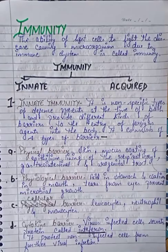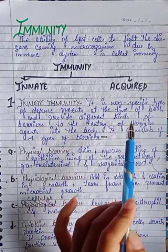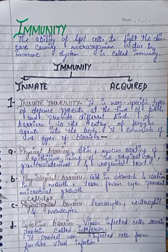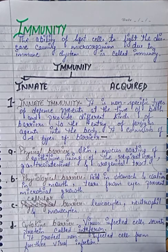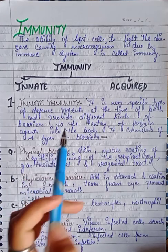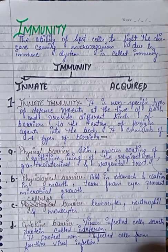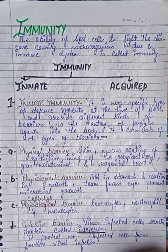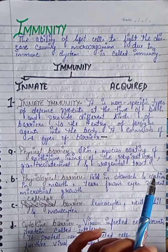Immunity is of two types: first is innate immunity, second is acquired immunity. Innate immunity is a non-specific type of defense present at the time of birth — from the time we are born, this immunity is present within us. It provides different kinds of barriers to the entry of foreign agents. Innate immunity provides four kinds of barriers to the entry of foreign agents.